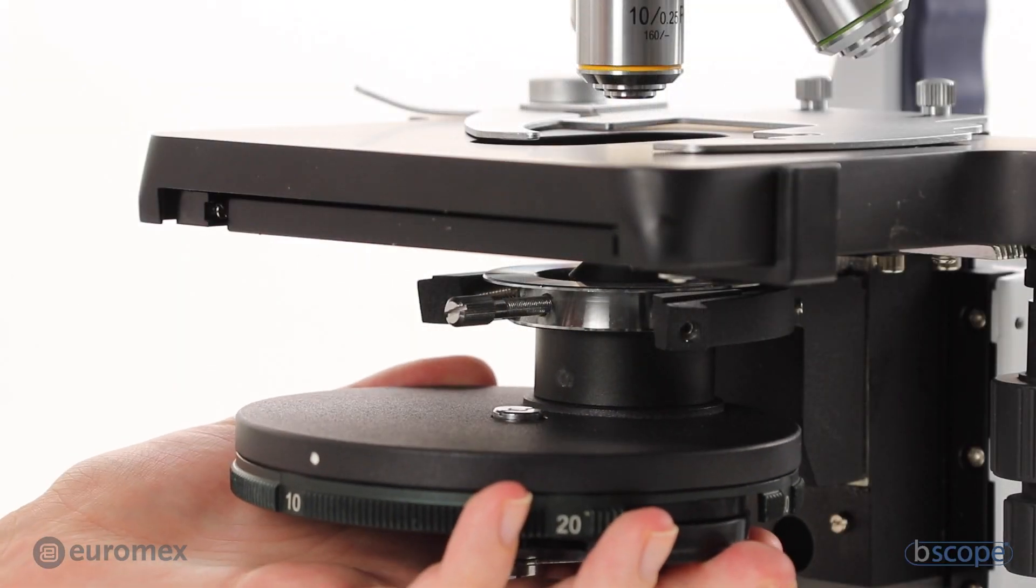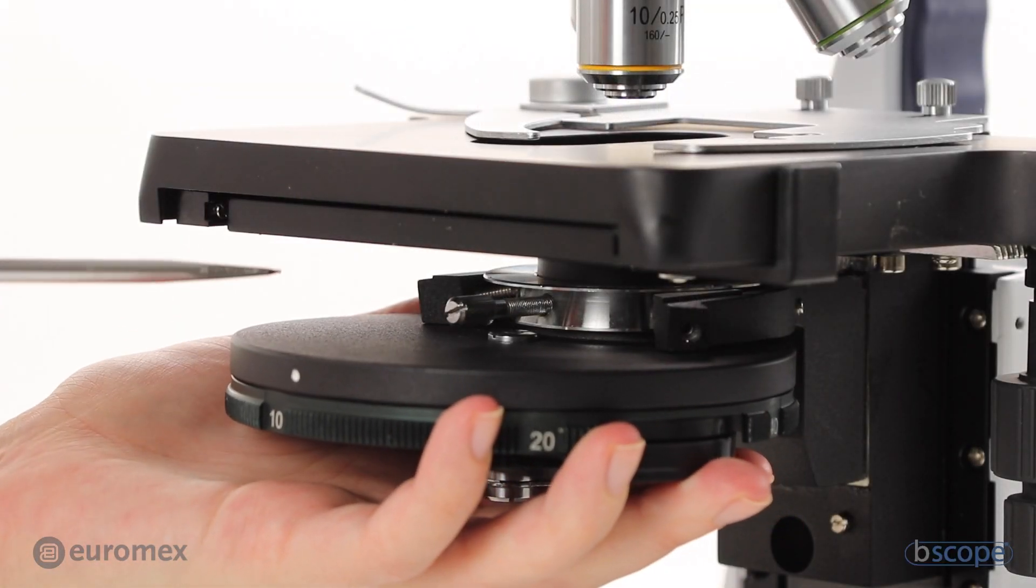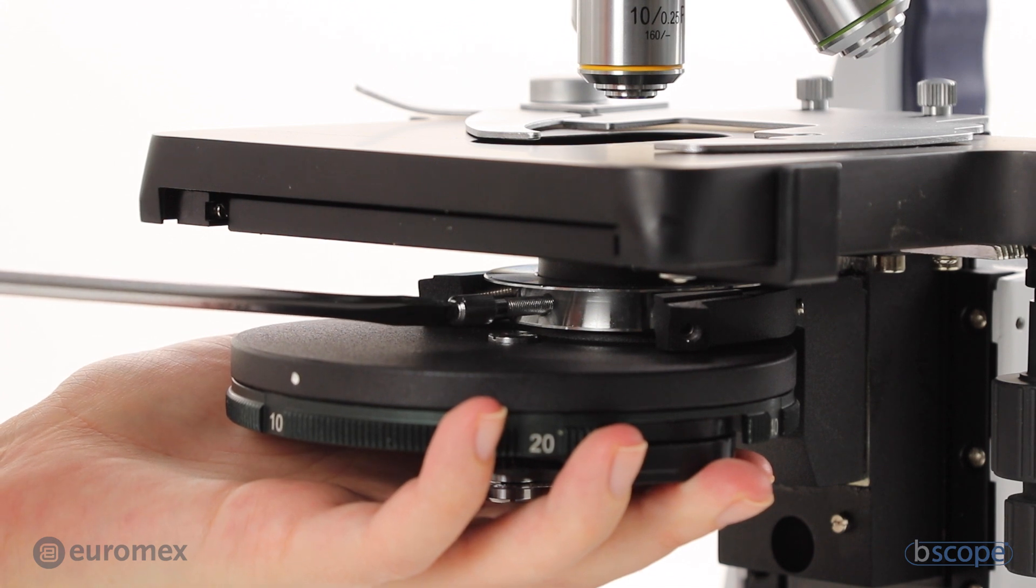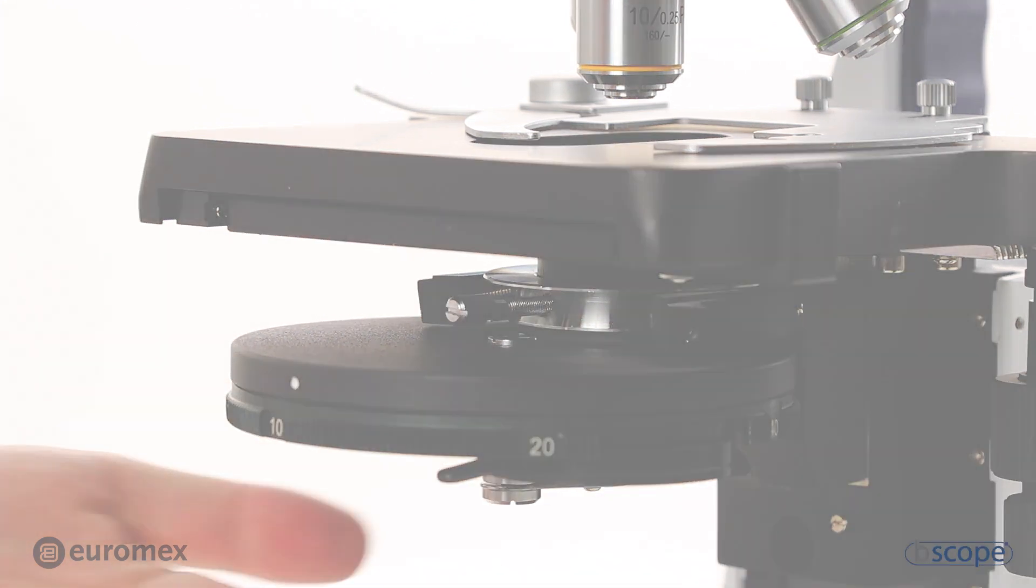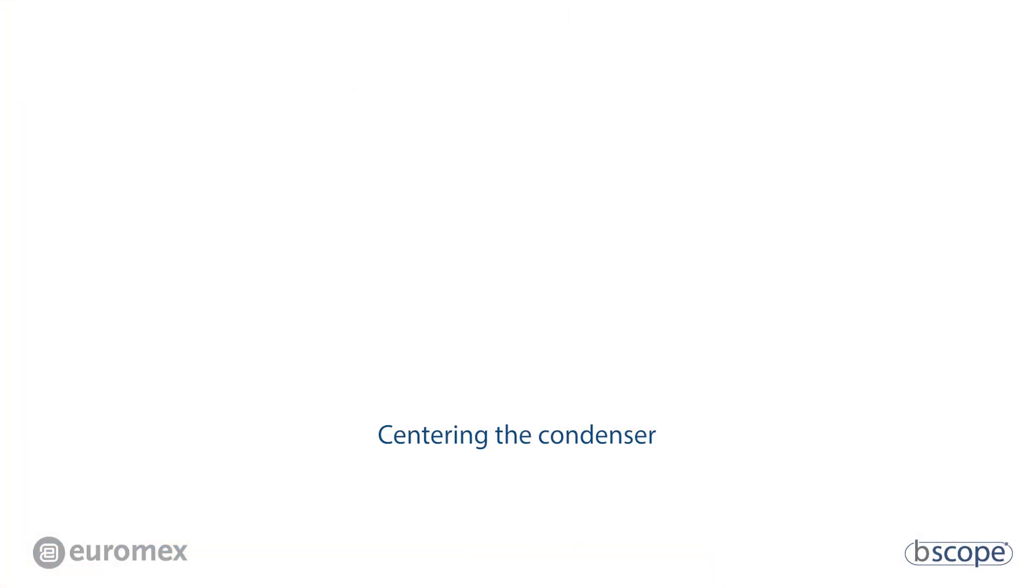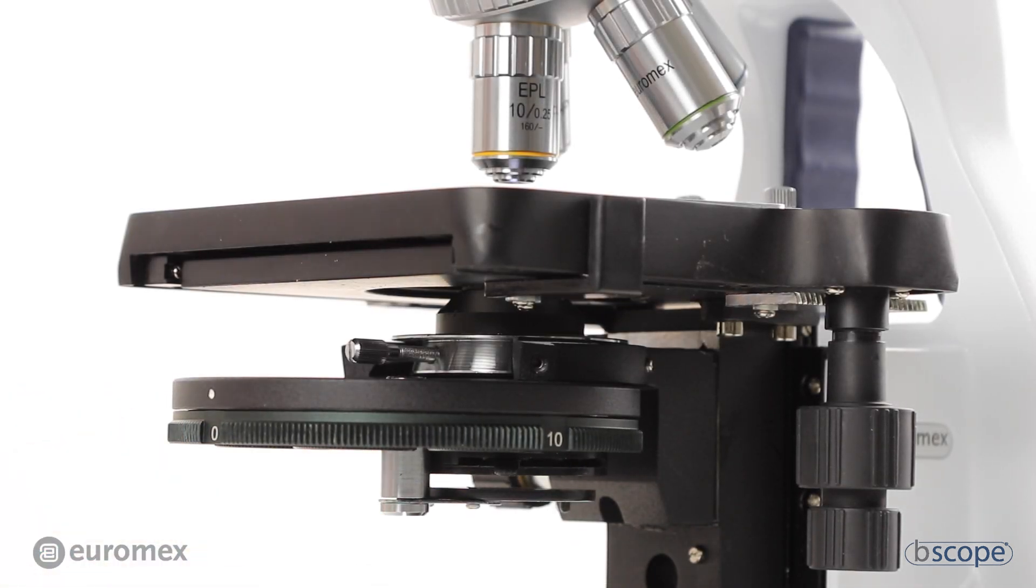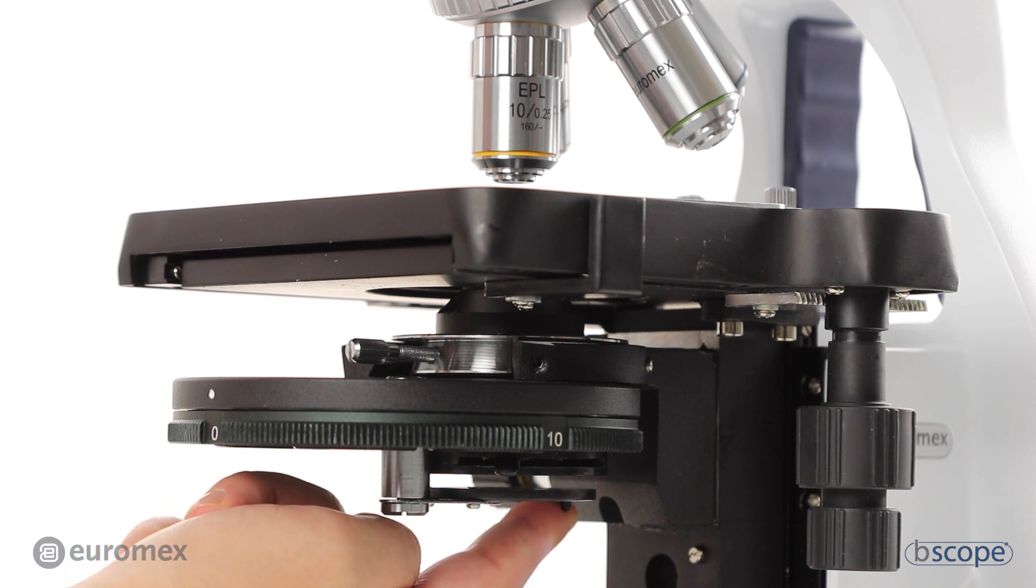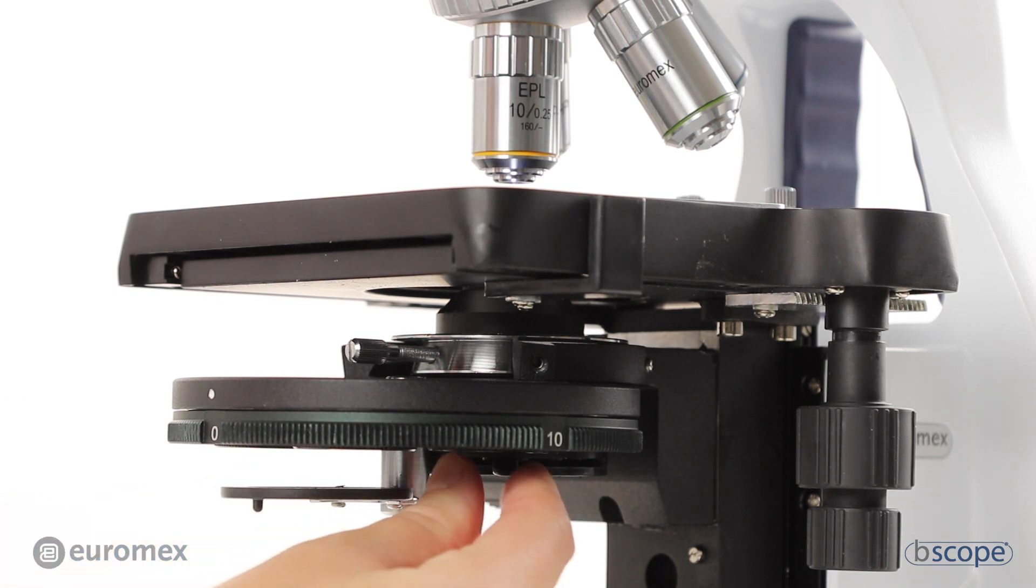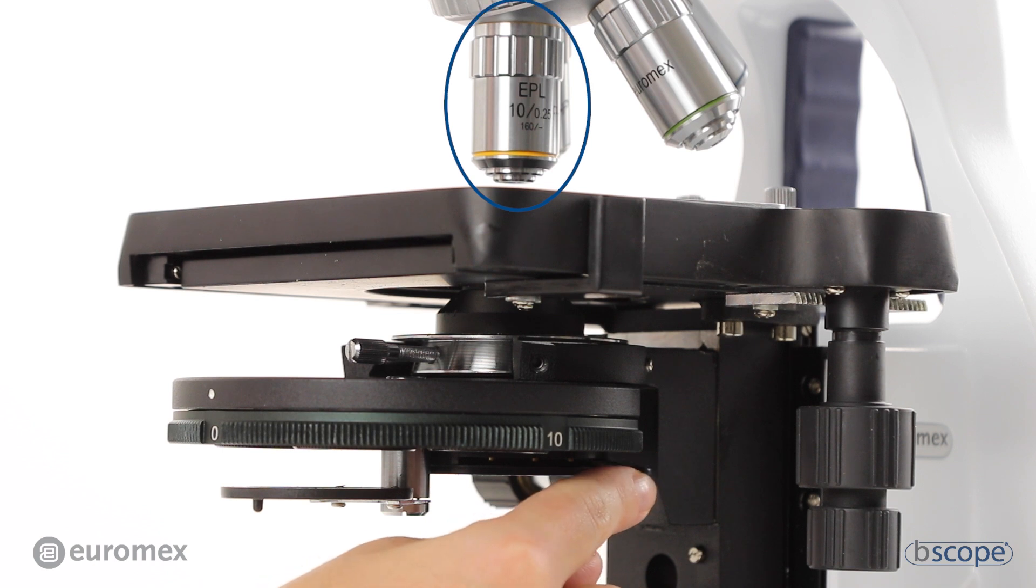Fit the Phase Contrast Condenser underneath the stage. Turn the selector to 0. Take the white filter out of the light path. Close the iris and make sure the smallest magnification is in place.